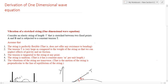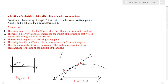Assume that a string of length L is stretched and then fixed at two end points A and B as shown in the first figure. It is then deflected and at some instant released and allowed to vibrate. Our aim is to find the displacement y of x and t at any time t greater than 0, at any point x between 0 and L.